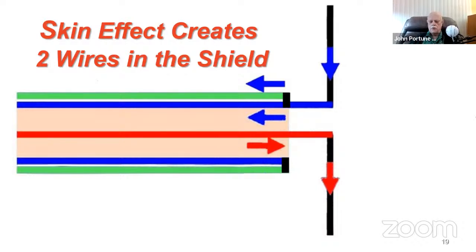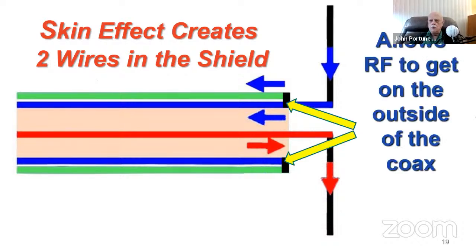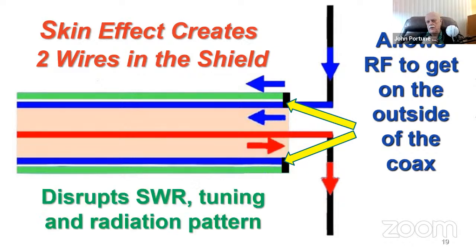We want the current in coax to flow only on the inside of the shield and on the outside of the center conductor, not on the outside of the shield. That's what the balun does. So if anybody asks you what's the purpose of a balun, don't give them the old meaningless saw — 'oh, it's to create balance from unbalanced.' That's true, but it doesn't tell you anything. The reason for a balun is to get rid of the shield current on your coax. What does shield current on the coax do for you? Nothing you want. It disrupts the SWR, it disrupts the tuning of the antenna, and it changes the radiation pattern.